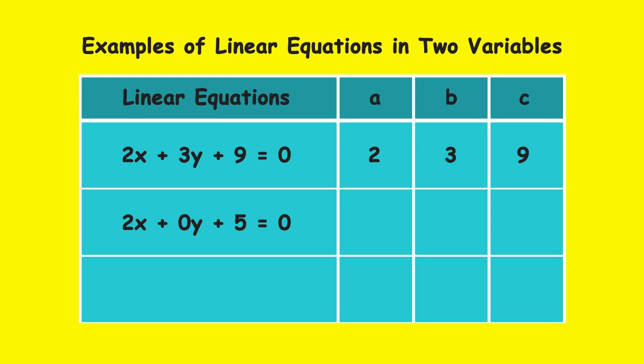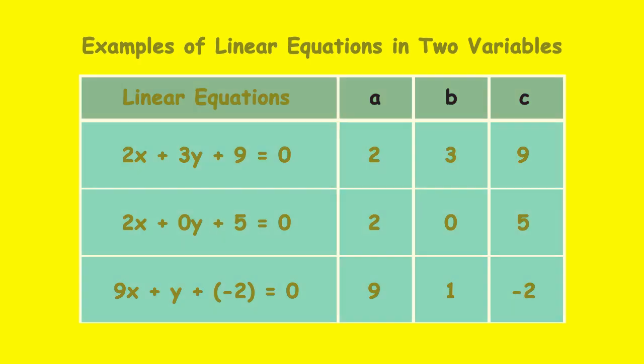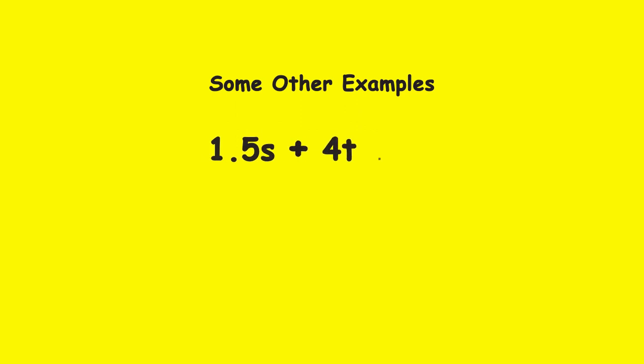0, and 5 respectively. In the third equation, 9x plus y plus minus 2 is equal to 0, the values of A, B, and C are 9, 1, and minus 2 respectively. Now look at some other examples of linear equations in two variables: 1.5s plus 4t is equal to 9,